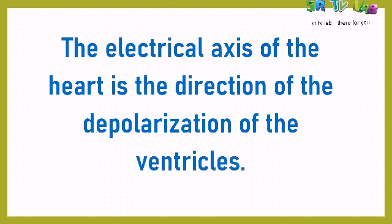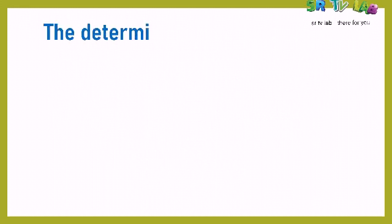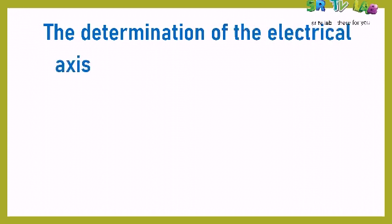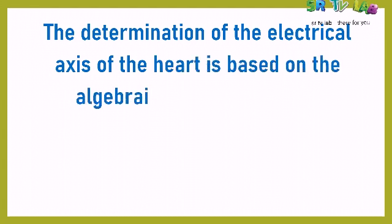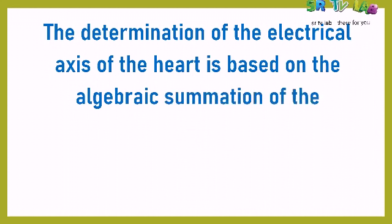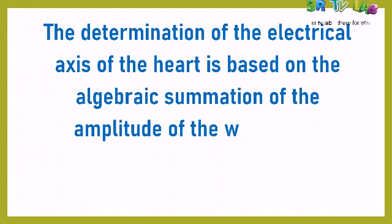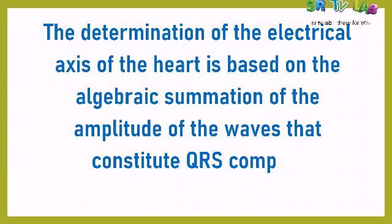Ventricles are two big chambers of the heart. The determination of the electrical axis of the heart is based on algebraic summation of the amplitude of the waves — the waves are the deviations found on the electrocardiogram — that constitute the QRS complex. So it is the summation of the amplitude of the waves that constitute the QRS complex.